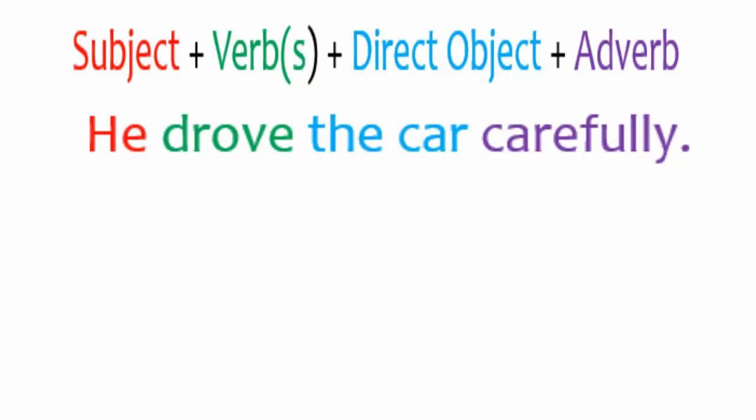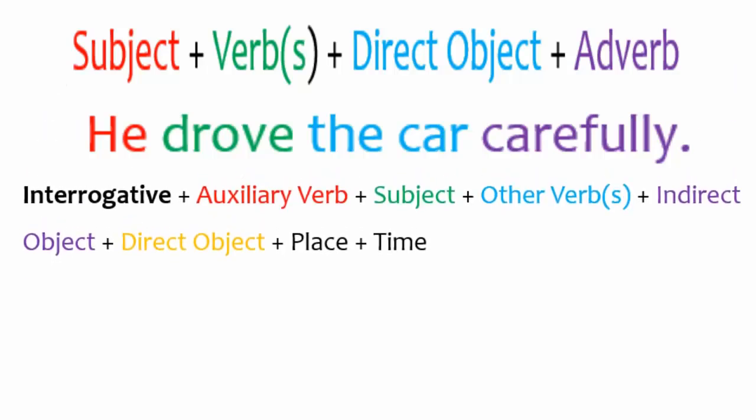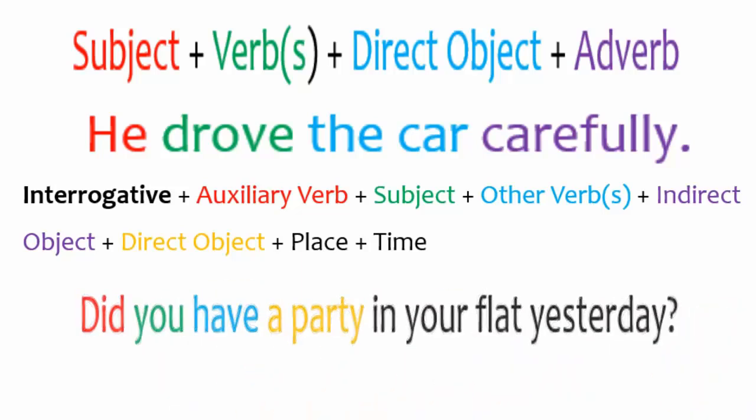In a question, the interrogative like 'how' or 'what' is placed first, followed by the auxiliary verb, the subject, then the other verbs, and then the indirect object, direct object, place and then time. For example: what would you like to tell me? Or, did you have a party in your flat yesterday?